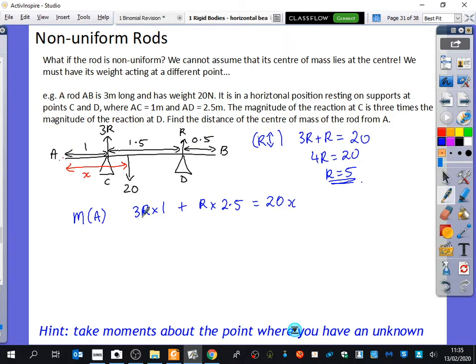So we end up with 15 plus 5 times 2.5 is 12.5 equals 20X. So that's 27.5 divided by 20. What did you say that was? 1 point? No, no, no. 1.375.